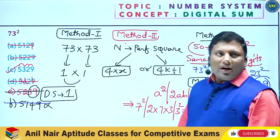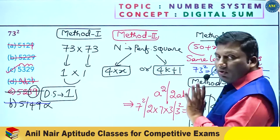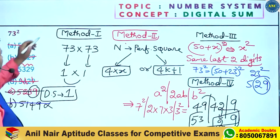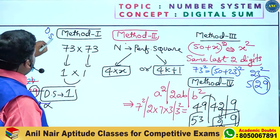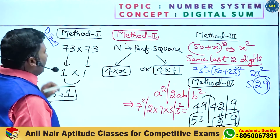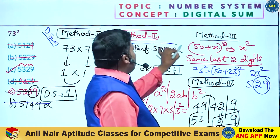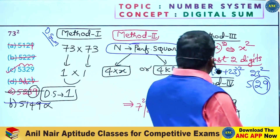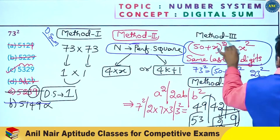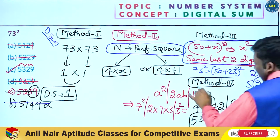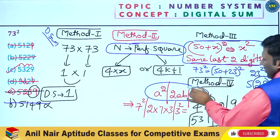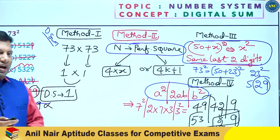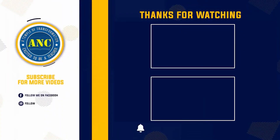5149 is wrong, 5329 is correct. To summarize all methods: Method 1 is the digital sum method. Method 2 is the perfect square method. Method 3 uses (50 plus x) whole square — last 2 digits same as x square. Method 4 uses A square plus 2AB plus B square.